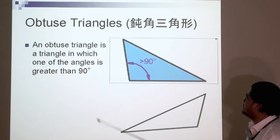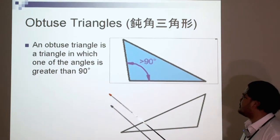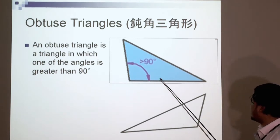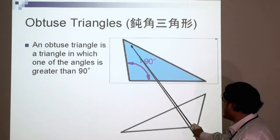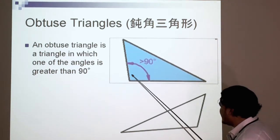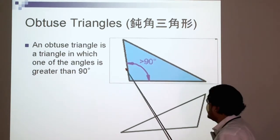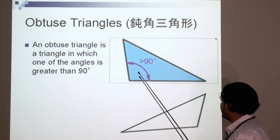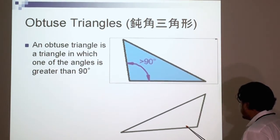An obtuse triangle. An obtuse triangle is a triangle in which one of the angles is greater than 90 degrees. Here's an example. This is less than 90, less than 90, and as you can see this point here, this is over 90 degrees. Another example, over 90 degrees.